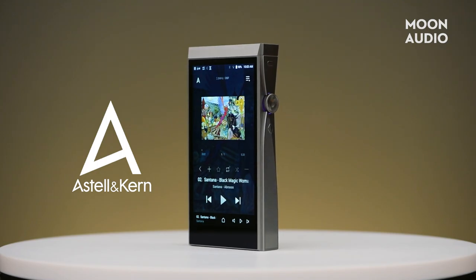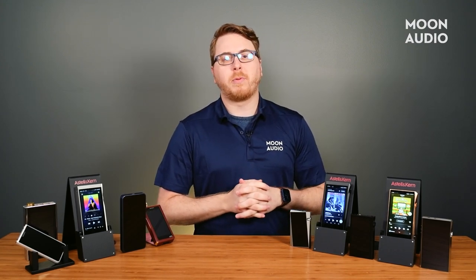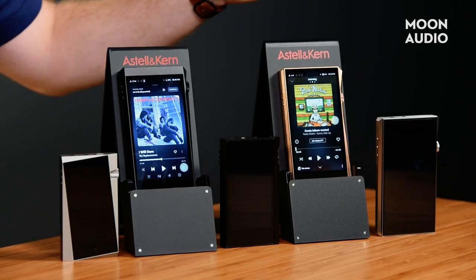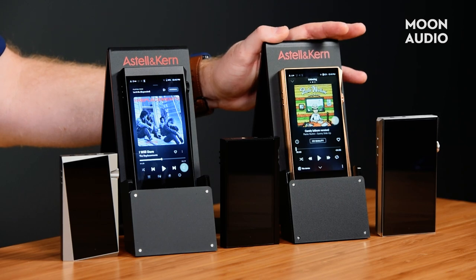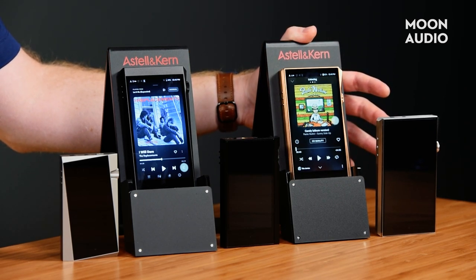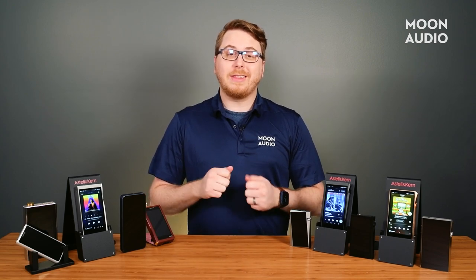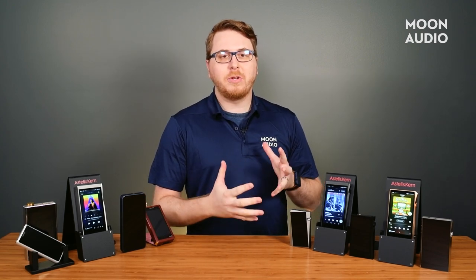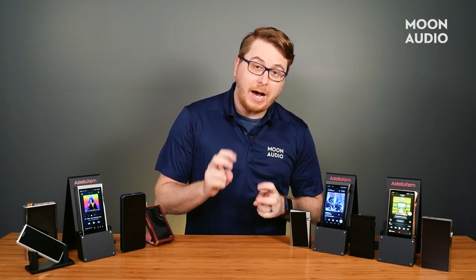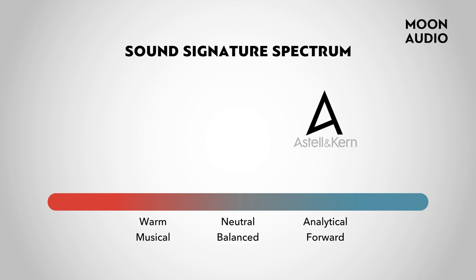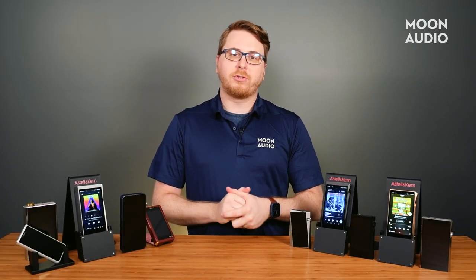First up, let's talk about Astell & Kern. Astell & Kern is a South Korean company that focuses on creating some of the most popular DAPs, CD players, headphones, and home cinema products on the market. Their products stylistically stand out from the crowd with their modern metals aesthetic, sharp edges, and sleek designs — their digital music players look like the future. They are best known for high-end music players, portable audio devices, or high-res iPods. Their sound signature tends to fall on the analytical side of the spectrum. Since they released their proprietary open app service, users can download and listen to their favorite music streaming services like Tidal, Qobuz, Spotify, and more.